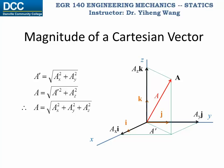By applying the Pythagorean theorem twice, we can derive that the magnitude of vector a equals the square root of a_x squared plus a_y squared plus a_z squared.